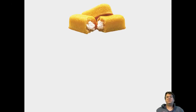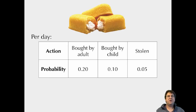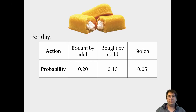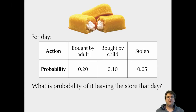A good test case is Twinkies. Imagine I have a store with a probability for a given package of Twinkies of being bought by an adult — 20% chance — bought by a child — 10% chance — and a 5% chance of someone stealing them. So 0.2 plus 0.1 plus 0.05 equals 0.35, meaning a 35% chance of it leaving the store that day.